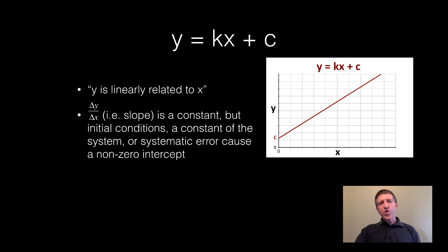And in this type of relationship we do have a constant slope. In other words, delta y over delta x is a constant, but there may be some initial conditions. There may be a constant of the physical system or there may be even some systematic error which causes a non-zero intercept.